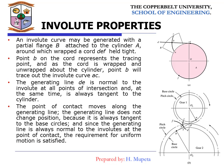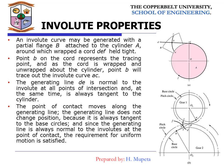Now we look at involute properties. An involute curve may be generated with a cord tied to a cylinder A — as shown in the figures on the right-hand side. Point B on the cord represents a tracing point, and as the cord is wrapped and unwrapped from the cylinder, point B traces out the involute curve C. The generating line DE is normal to the involute at all points of intersection and is always tangent to the cylinder.